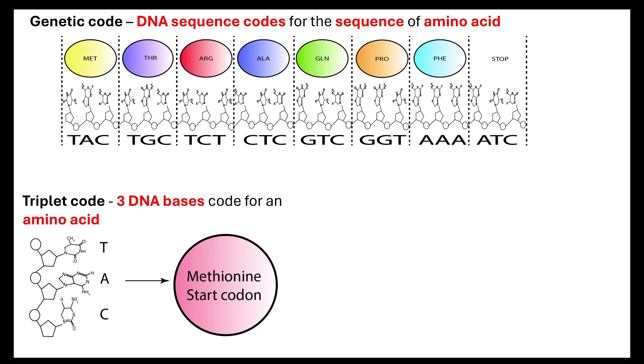Our triplet code is three DNA bases, which will code for a specific amino acid. So, for example, thymine, adenine, cytosine will code for methionine, which is the start codon.